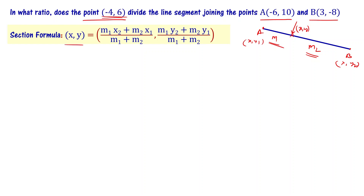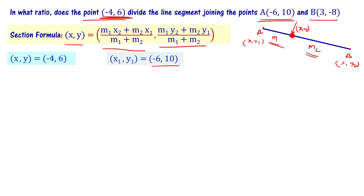We can find the values of M1 and M2 using the section point formula. The section formula says that x comma y equals M1 x2 plus M2 x1 divided by M1 plus M2, and M1 y2 plus M2 y1 divided by M1 plus M2. The point minus 4 comma 6 is dividing the line segment into two parts, so x comma y is minus 4 comma 6, x1 comma y1 is minus 6 comma 10, and x2 comma y2 is 3 comma minus 8. We need to find the value of M1 by M2.